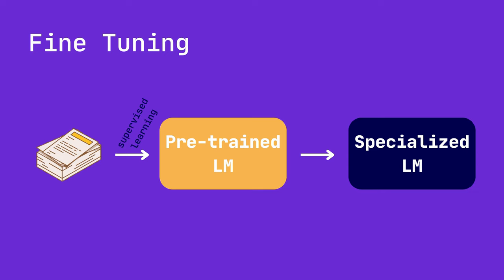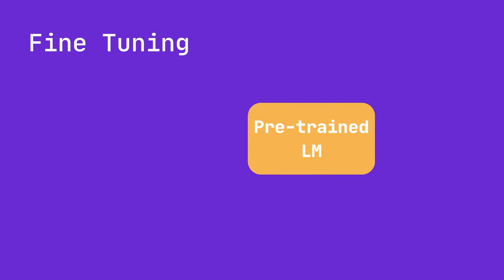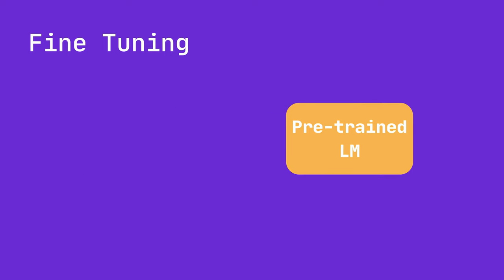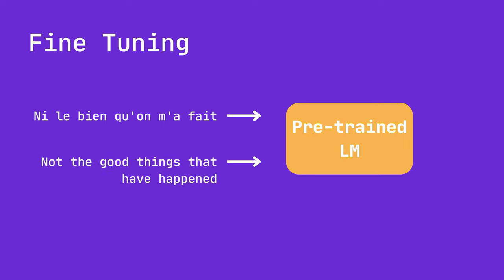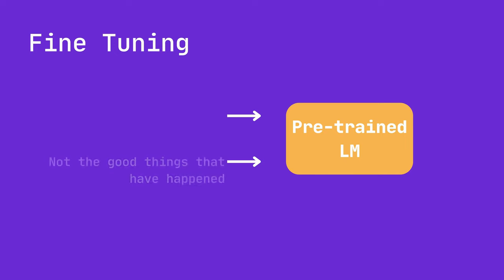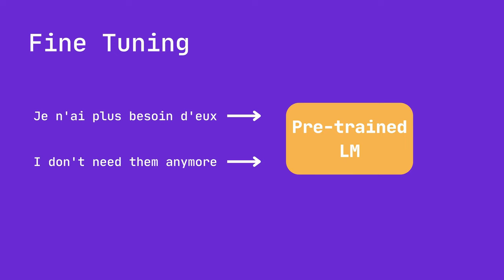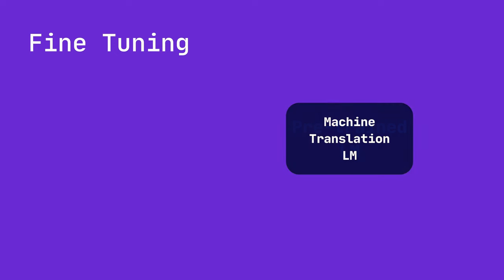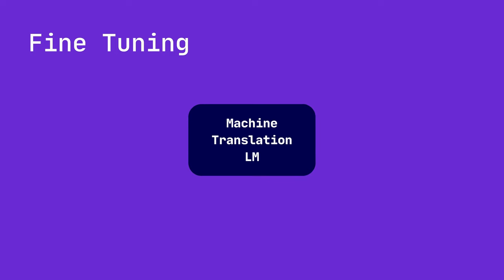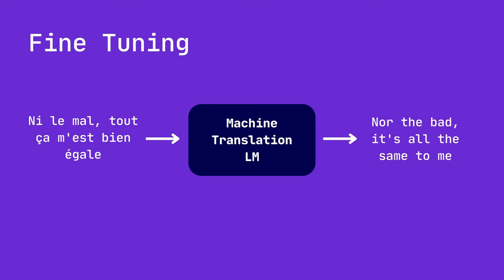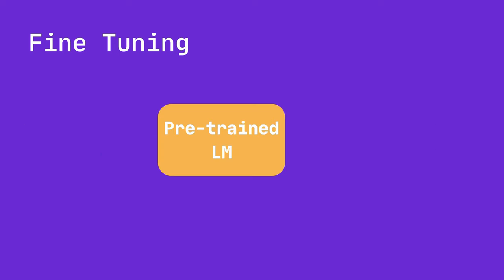A relatable example is machine translation, where a pre-trained language model can be fine-tuned on a parallel corpus containing sentences in the original and the target language. Through this process, the model learns to map the linguistic structures and patterns between the two languages, ultimately enabling it to translate text effectively.